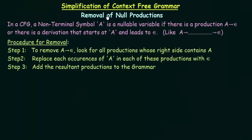In this lecture, we will be studying about the last step in simplification of context-free grammar, which is the removal of null productions. A non-terminal symbol A is a nullable variable if there is a production A gives epsilon, or if there is a derivation that starts at A and leads to epsilon. Those are the null productions that we need to remove in order to simplify our CFG.